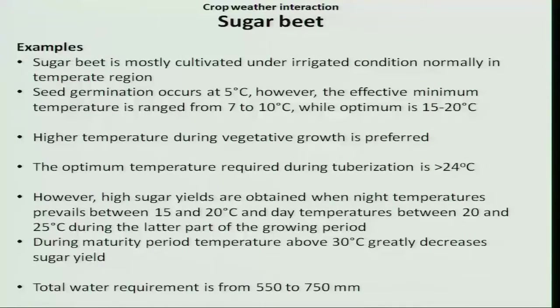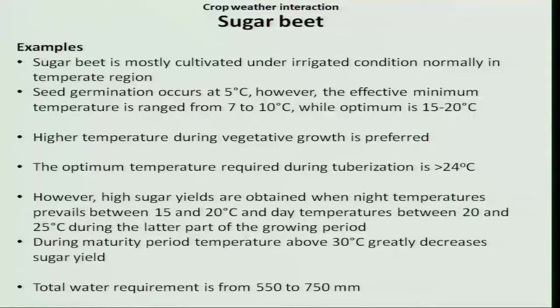Let us see the crop weather interaction for sugar beet. It is one of the important crops cultivated in most parts of the temperate region. To some extent it can be grown under tropical regions by introduction of new varieties, and several varieties already exist for tropical regions also. Let us see the crop weather interaction during different growth phases.